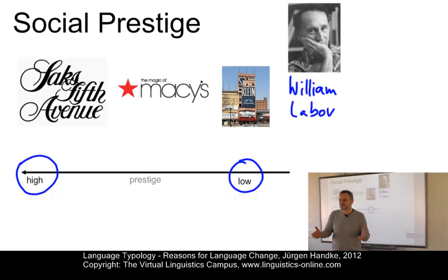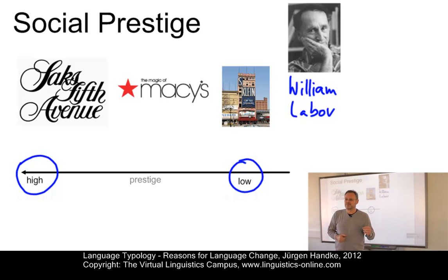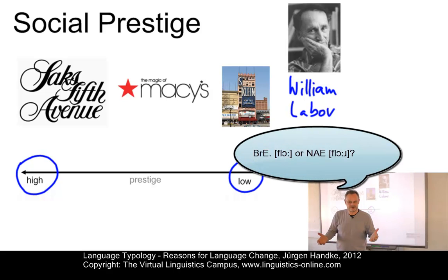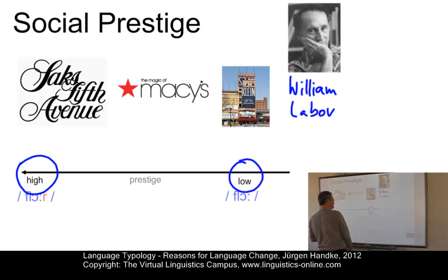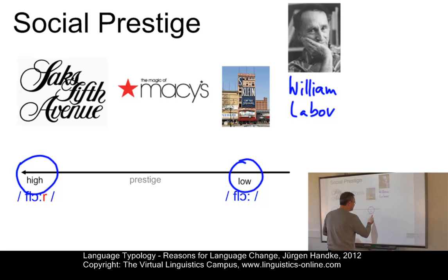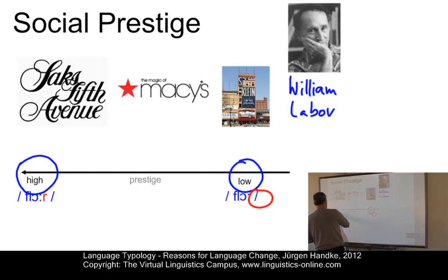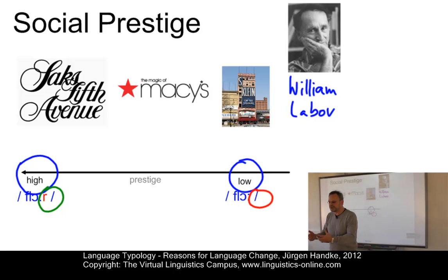What Labov did was brilliant and simple at the same time. He simply asked people where he could find a certain type of trousers, shirt, or whatever, and they had to answer something like 'on the second floor'. He found out that in the less prestigious storehouses, people would prefer the variant without a post-vocalic R — they would say 'floor' — whereas in the prestigious storehouses, the tendency was to use the post-vocalic R. Hence, it was considered prestigious by those who bought their clothes in cheap-priced stores to sound British at the time. Today, this is no longer the case.